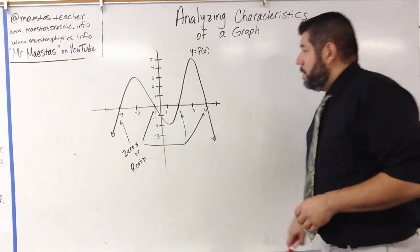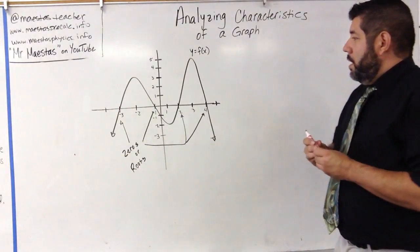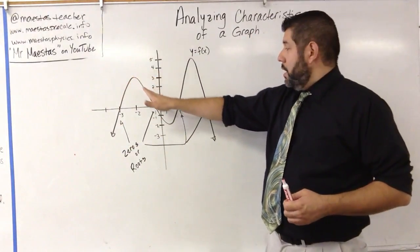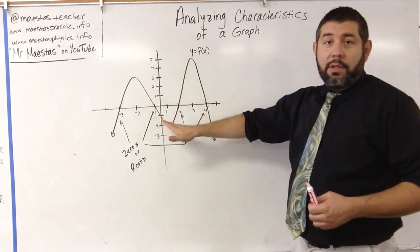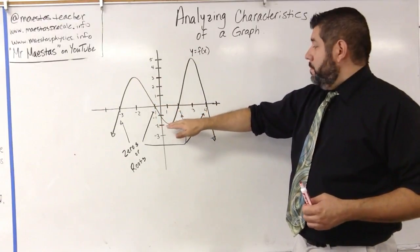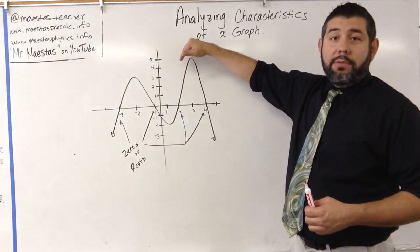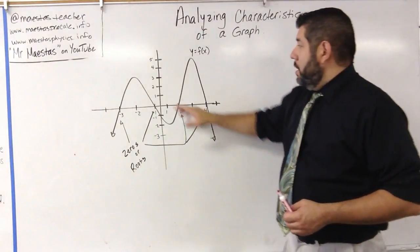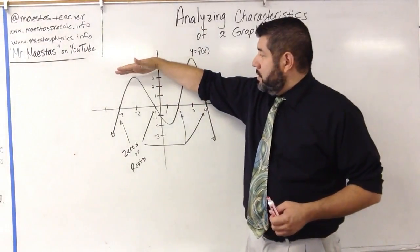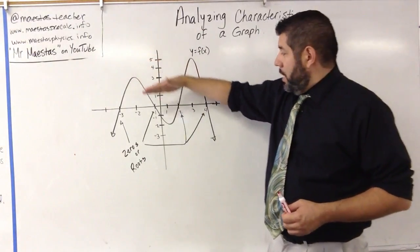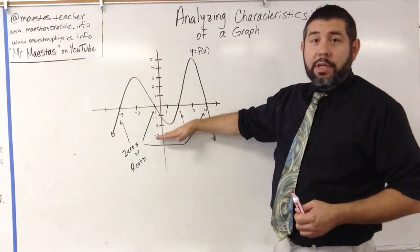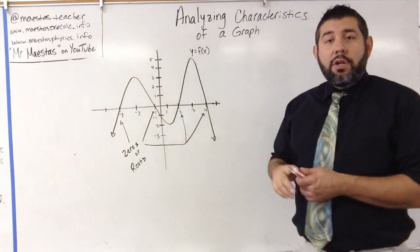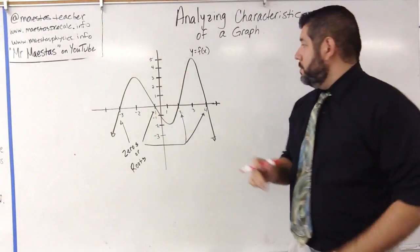The graph comes to a peak, then comes down, then comes back up to another peak, and then comes down. These places where the peak happens, or where it bottoms out, these are called extrema.